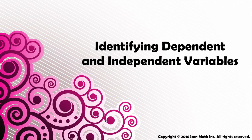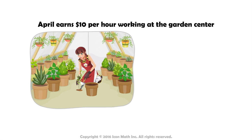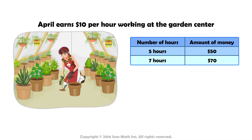Identifying dependent and independent variables. April earns $10 per hour working at the garden center. If she works for 5 hours, she will earn $50. If she works for 7 hours, she will earn $70. The number of hours April works and the amount of money April makes are related.